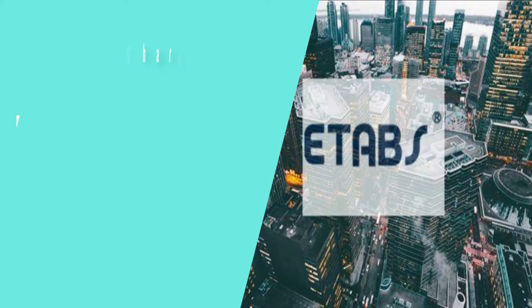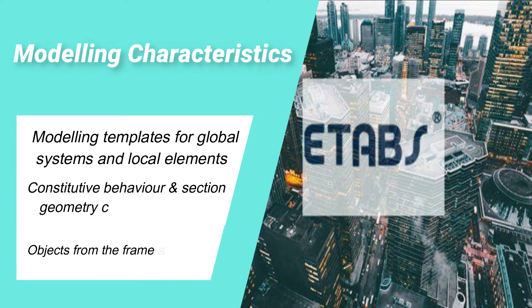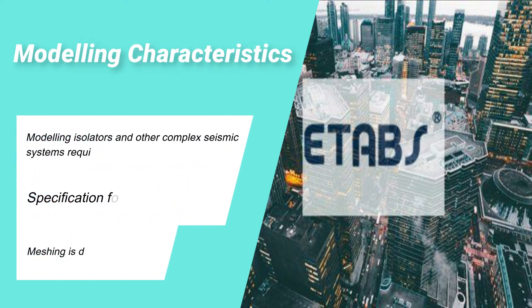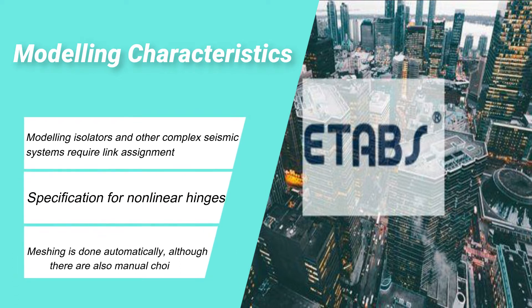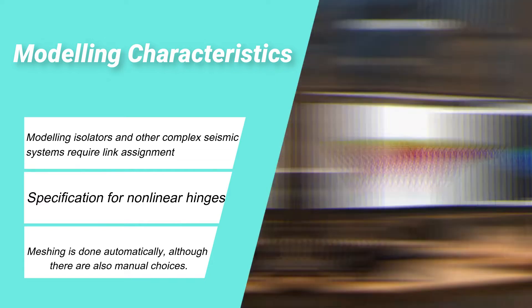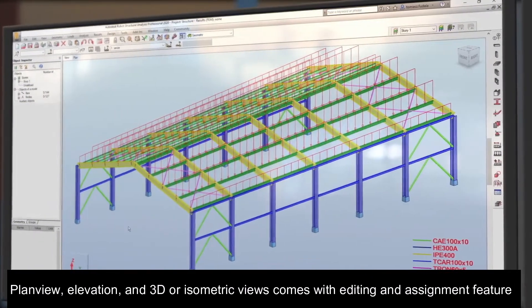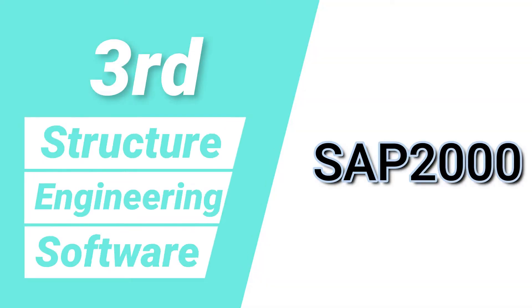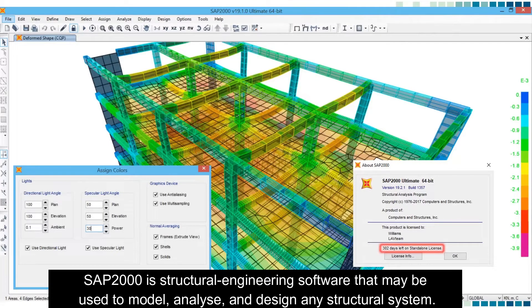ETABS is built on the assumption that multi-story structures often comprise similar or identical floor plans that replicate vertically. Modeling characteristics include: modeling templates for global systems and local elements; customizable constitutive behavior and section geometry; frame and shell objects grouped together; link assignment specification for non-linear hinges and complex seismic systems; automatic meshing with manual options; and plan, elevation, 3D/isometric views with editing and assignment features.